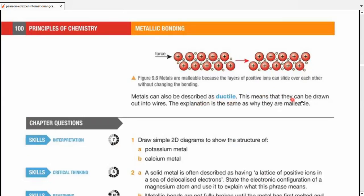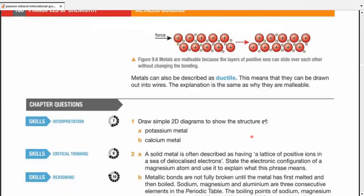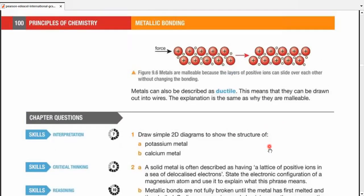Metals are also ductile, which means they can be drawn into wires, stretched, or pushed into wires. And the explanation is literally the same as why they are malleable. As they can move, the layers can slide over one another. So it's pretty easy. So that's about it for metallic bonding. Thank you.